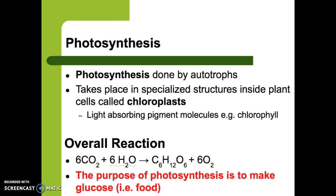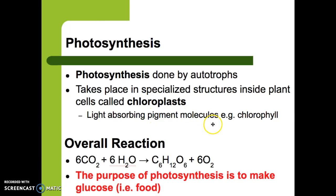Photosynthesis is done by autotrophs — these are typically plants or algae. This means that they can make their own food using energy from the Sun. This happens in specialized structures inside a plant called chloroplasts. They absorb light into their pigments; one very specific pigment is chlorophyll. Chlorophyll is inside chloroplasts, which makes plants green, and it helps them do photosynthesis.